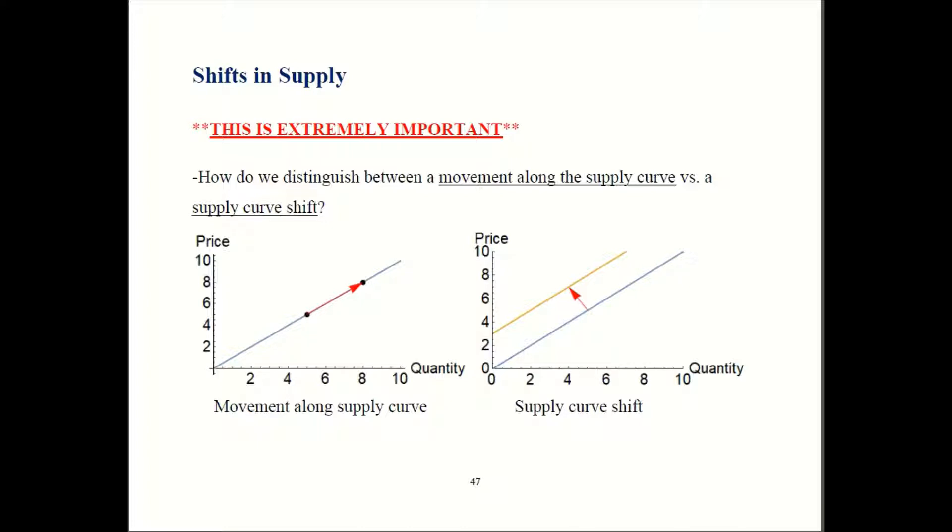This is very similar to the issue we saw earlier with demand. The first graph here shows you a movement along the same supply curve. It's still the same curve, we're just switching to a different point on it. In the second graph we jump from one curve to another.